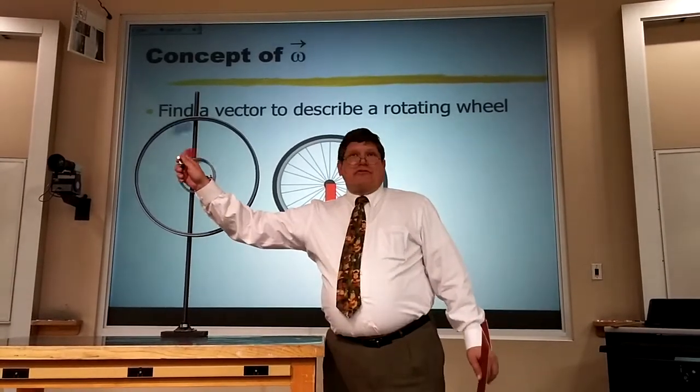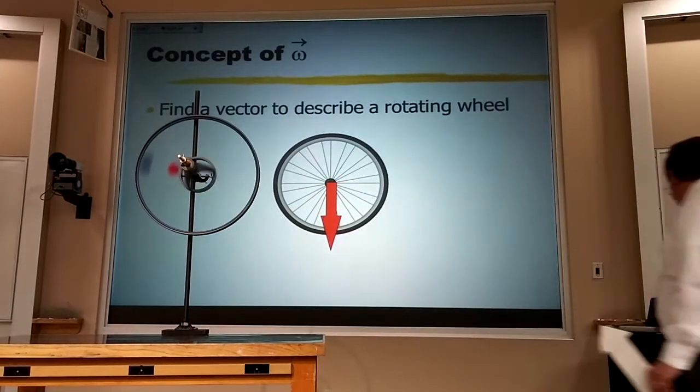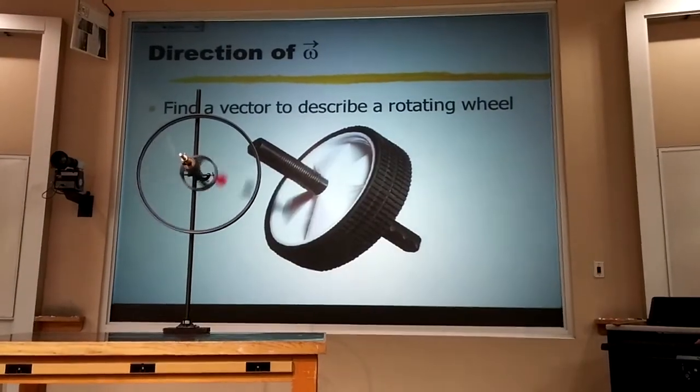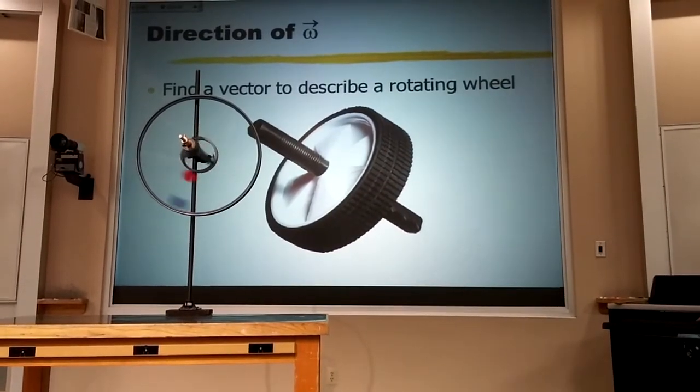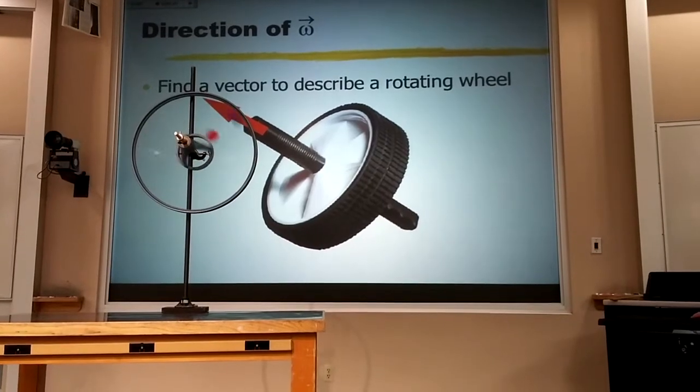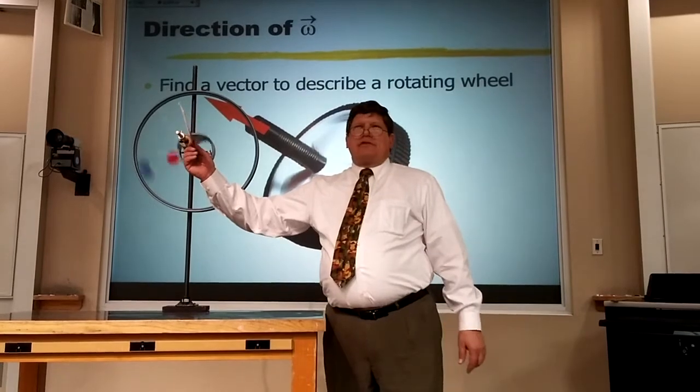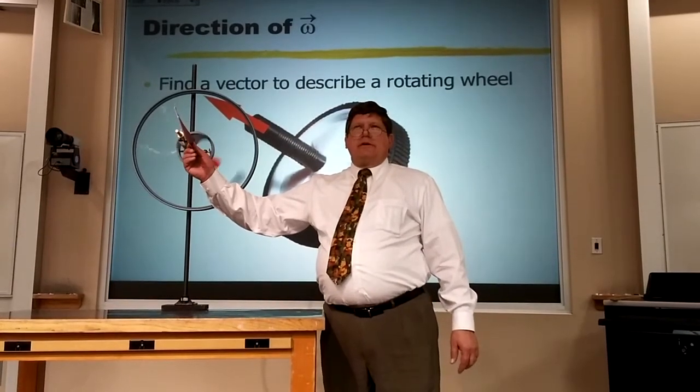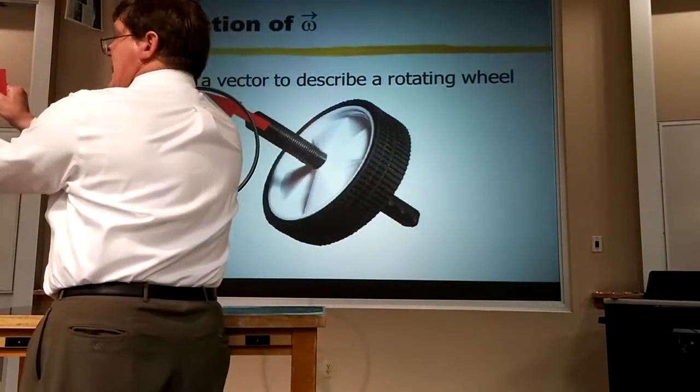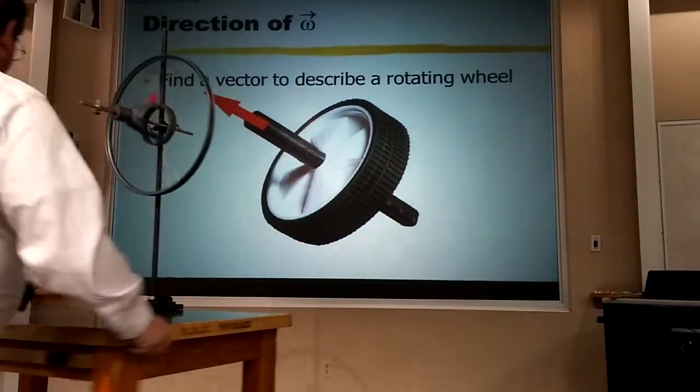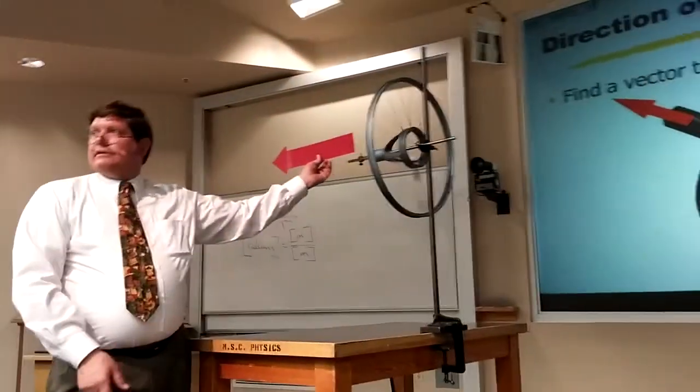Except for the axis. Except for the axis. And that's how we define the direction of the omega vector, of the angular velocity vector, along the axis. It seems goofy, I know, but that's the only part of the wheel that's not changing direction. So, if I were to say the omega vector points this way, you could line up the axis that way. And then you would know how the wheel was rotating.